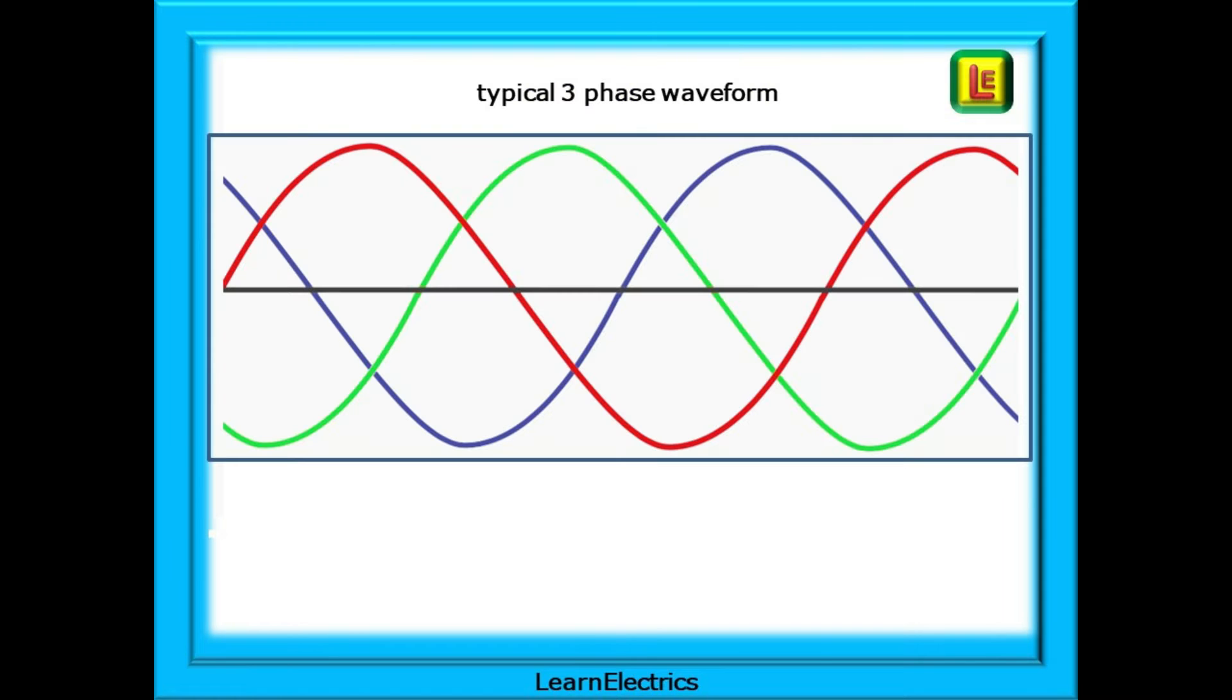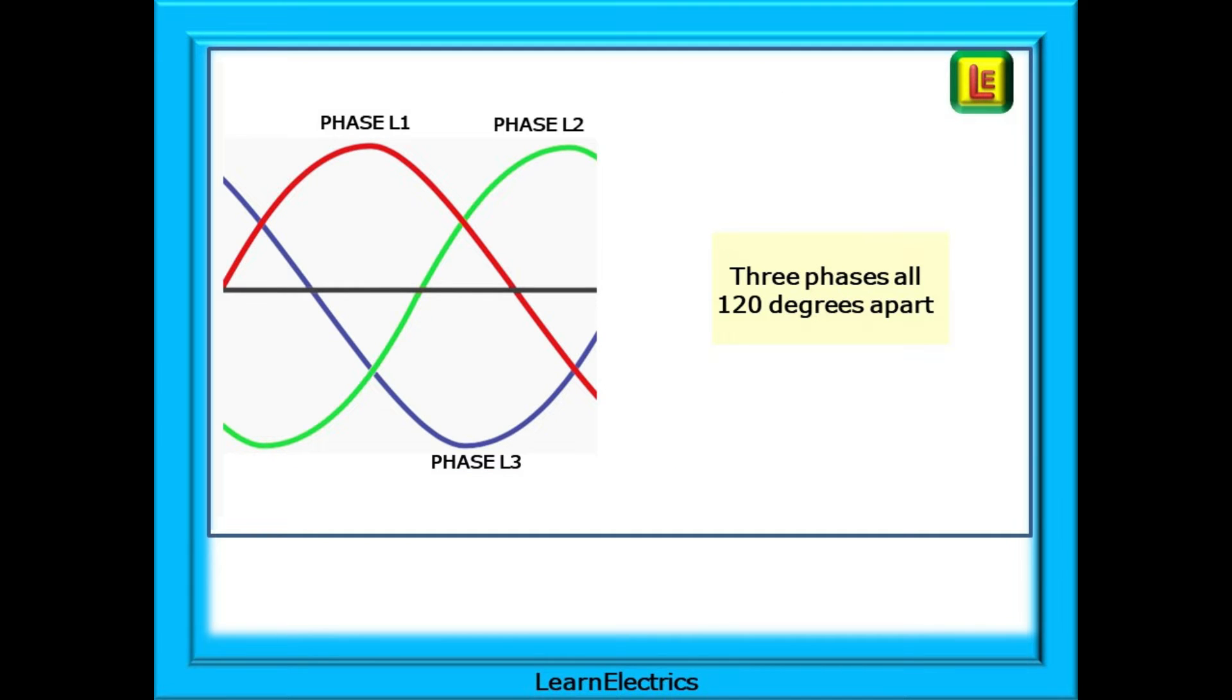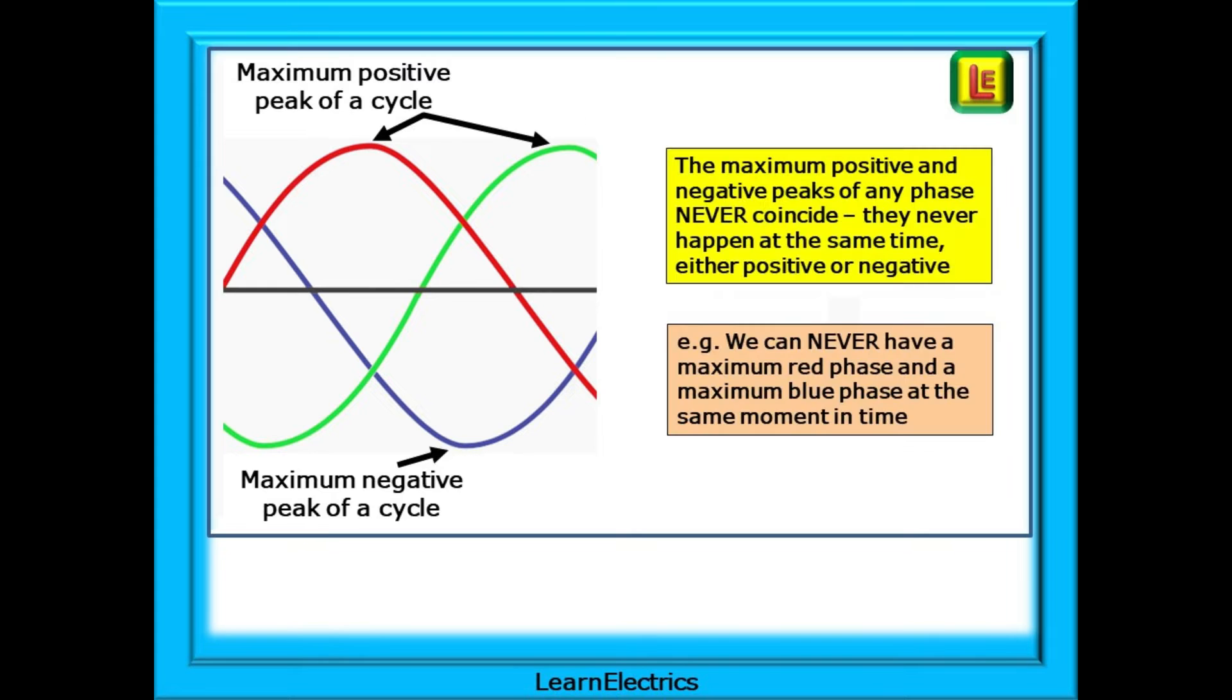You will all be familiar with the typical three-phase waveform. Three phases, all 120 degrees apart. Each waveform will have a maximum positive peak and a maximum negative peak. The maximum positive and negative peaks of any phase will never coincide. And for the purposes of this video, we are not going to worry about peak-to-peak values or RMS values. We are keeping things very simple.